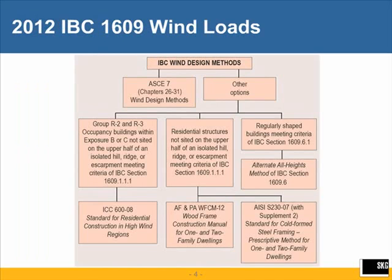This slide gives you the choices of wind design that are provided in the 2012 IBC itself. Section 1609 of the code covers wind design, and in that section there are choices of wind design methods. You can, for all wind design, just go to ASCE 7-10 — that is definitely an option. If for whatever reason you don't want to do that, for certain residential buildings you have other choices.